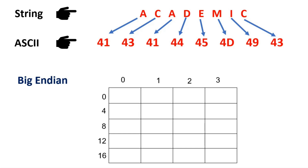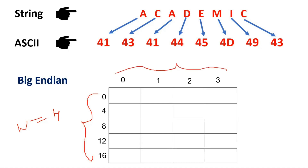Here is the string 'ACADEMIC' and its equivalent representation in ASCII. According to big endian, the MSB byte occupies the least address available in memory and the LSB byte occupies the maximum address available. My memory starts from address 0, so I will store data starting from address 0. The word size is 4 bytes — these are the word addresses and these are the byte addresses. Every ASCII is 1 byte, and there are 8 characters in 'ACADEMIC', so 8 different ASCII values — 8 bytes, or 2 words since the word size is 4 bytes.